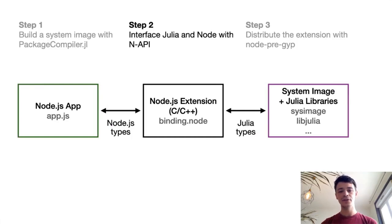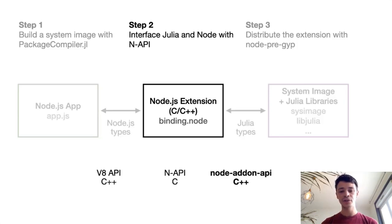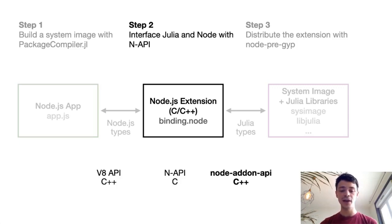The second step is to interface the Julia and Node runtimes. To do that, you need to write a Node.js extension, typically in C or C++. The main goal of this extension is to call the Julia function, return the result to Node.js, and also to convert between Node.js types and Julia types. You can use different APIs: directly the V8 API in C++, but this is not recommended since it's not stable across Node versions. A better choice is the Node extension API — NAPI — written in C, or its C++ wrapper called node-addon-api, which I'll use in the code examples.